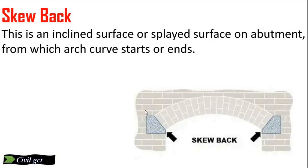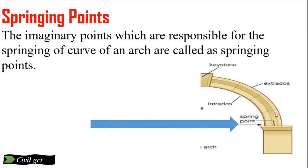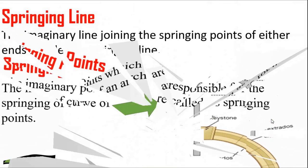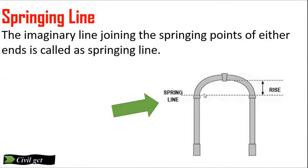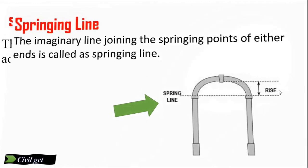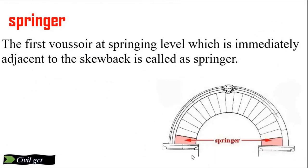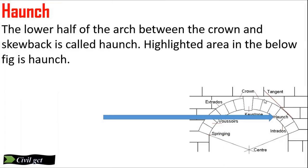Skewback: this is an inclined surface on the abutment from which the arch curve starts or ends. Springing points: the imaginary points which are responsible for the springing of the curve of an arch are called springing points. Springing line: the imaginary line joining the springing points at either end is called the springing line.